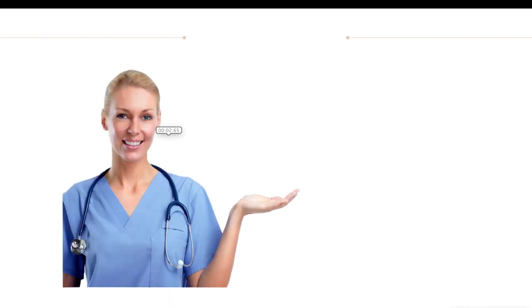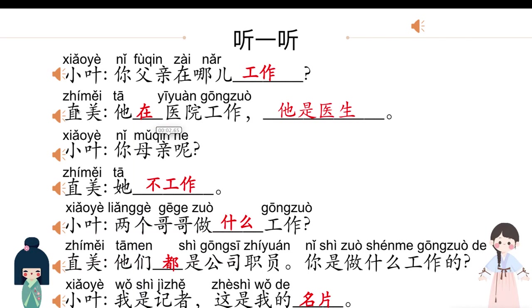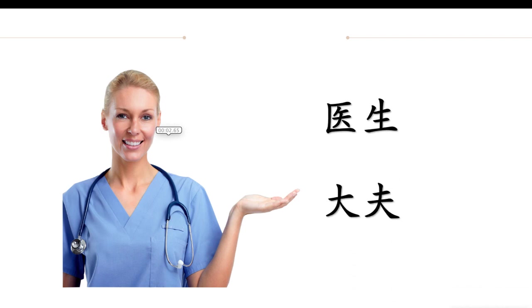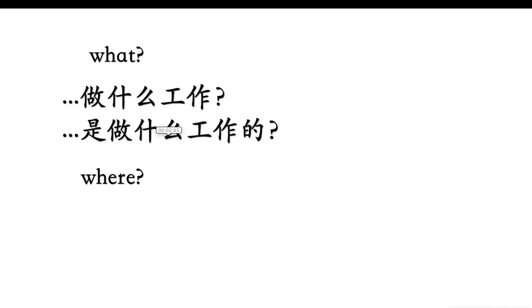In this dialogue, 直美的父亲是医生. 医生又叫大夫 — note that 大夫 is read as dàifu, not dàfū. 直美的父亲是大夫. We learned how to ask what someone does for a living: 做什么工作? 是做什么工作的?